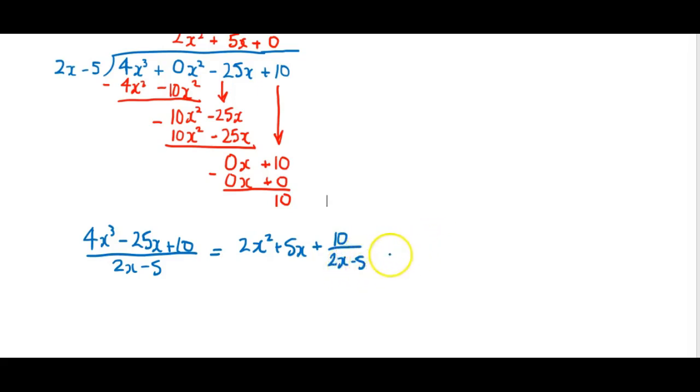And we can rewrite this in another way. By multiplying everything by the divisor. So we just multiply all by 2x - 5. To give us another form of our answer. So we have the dividend is equal to minus 25x + 10.